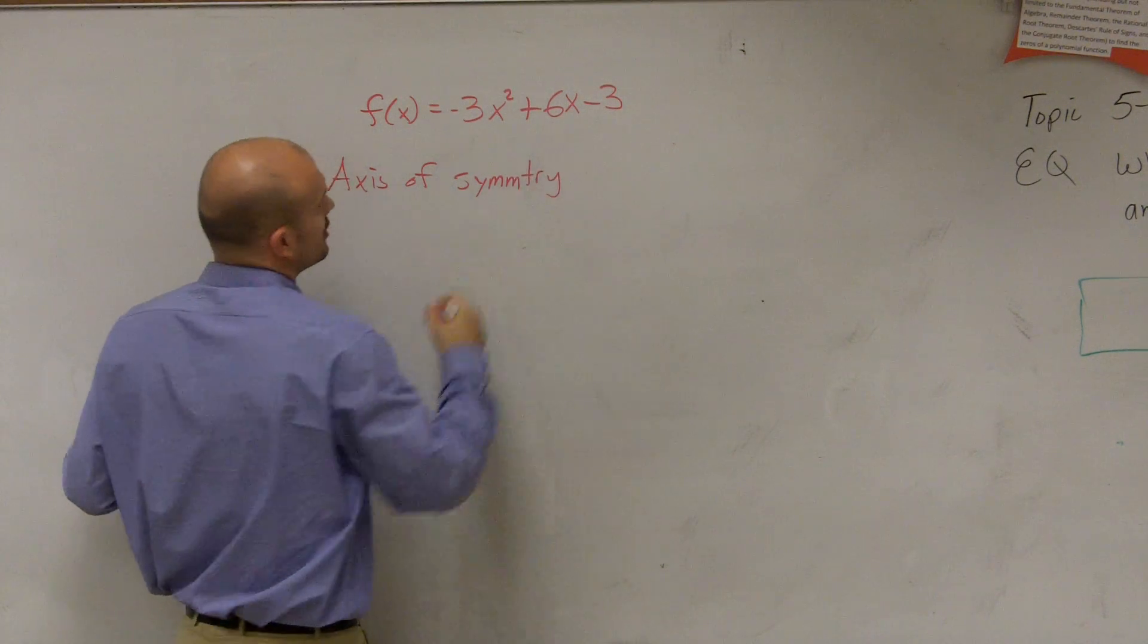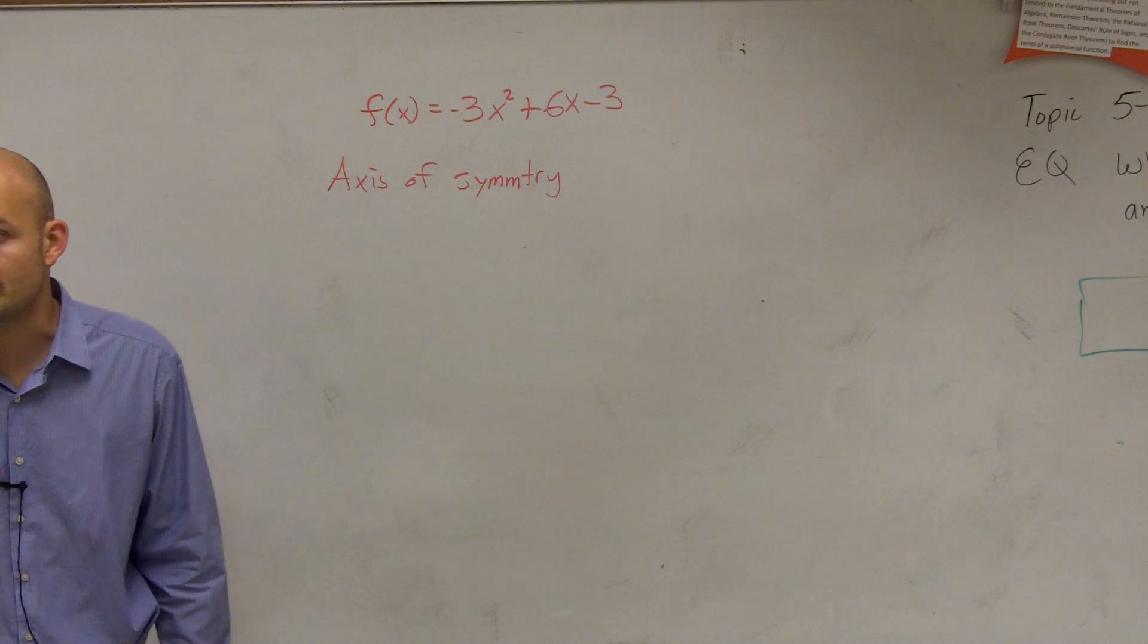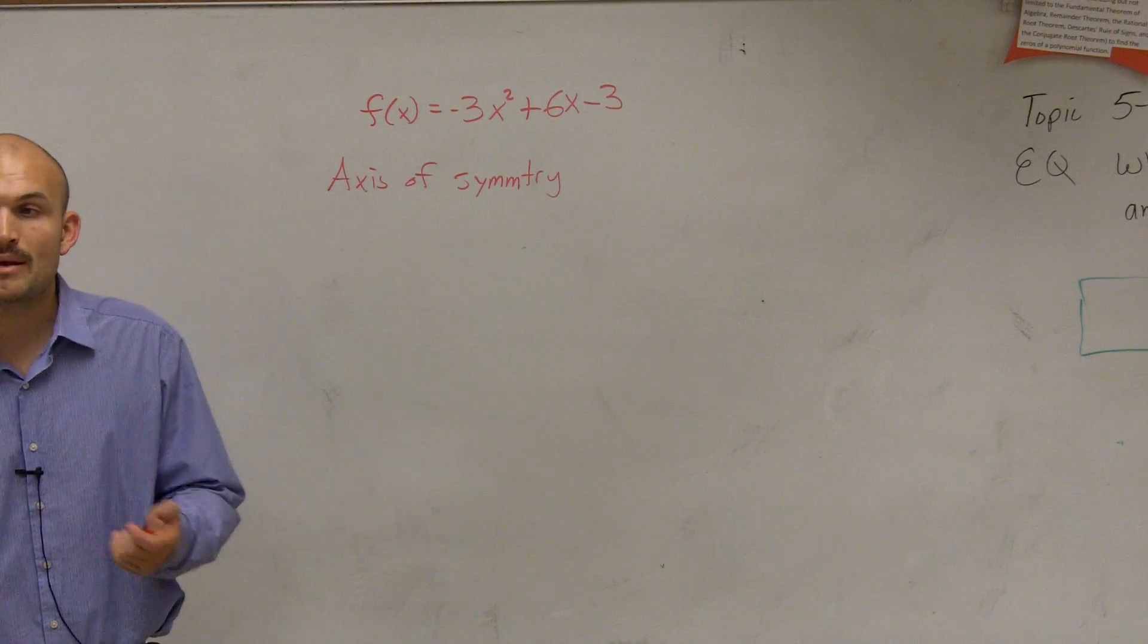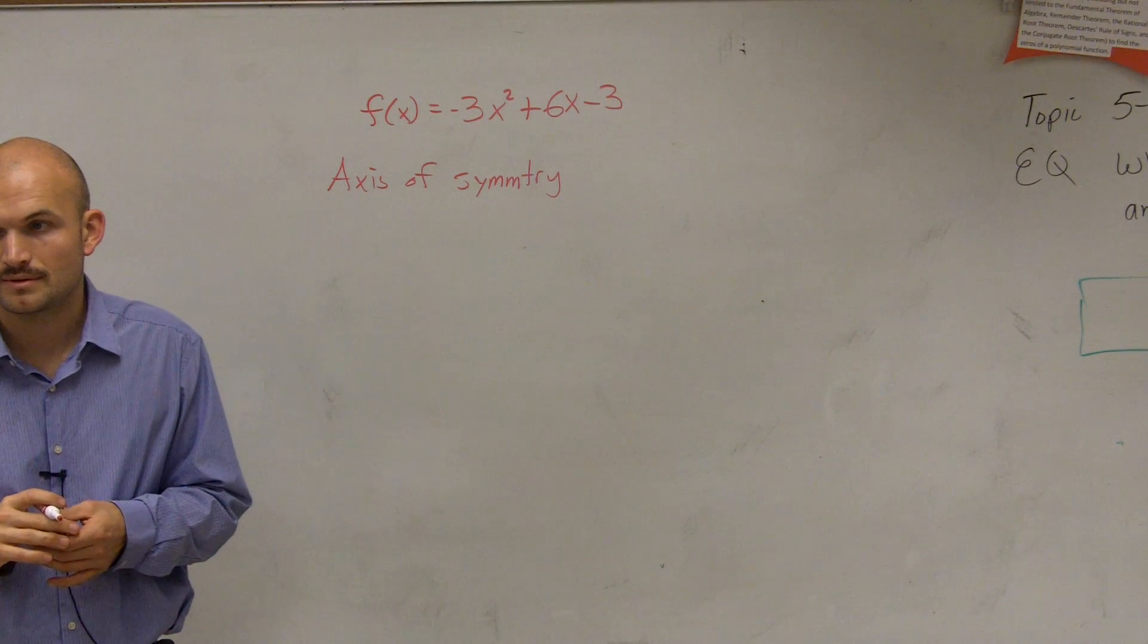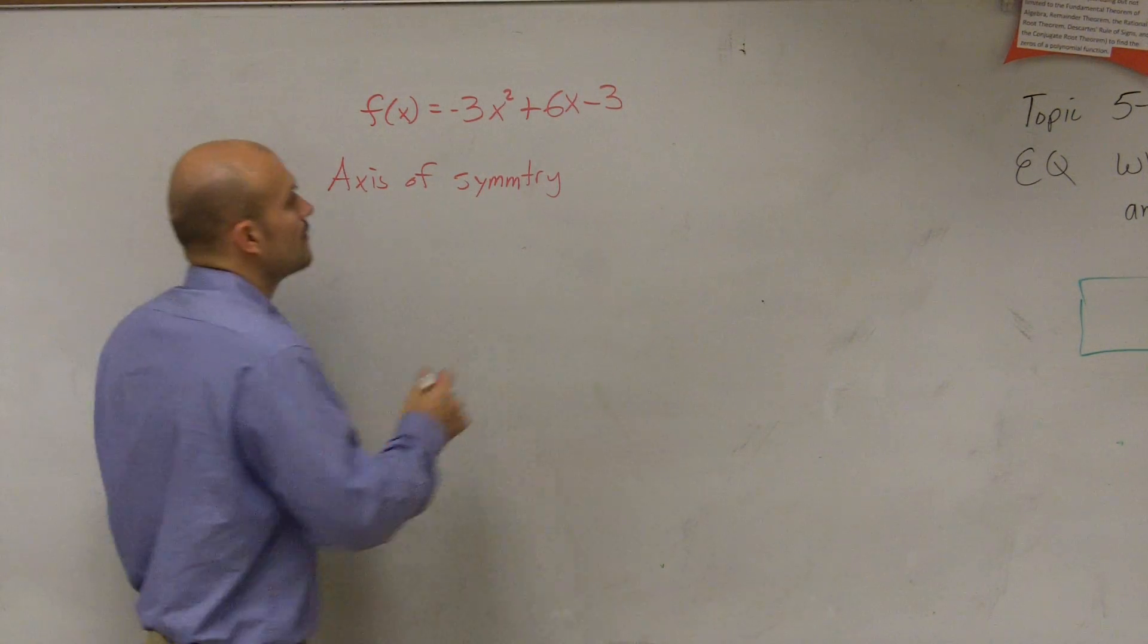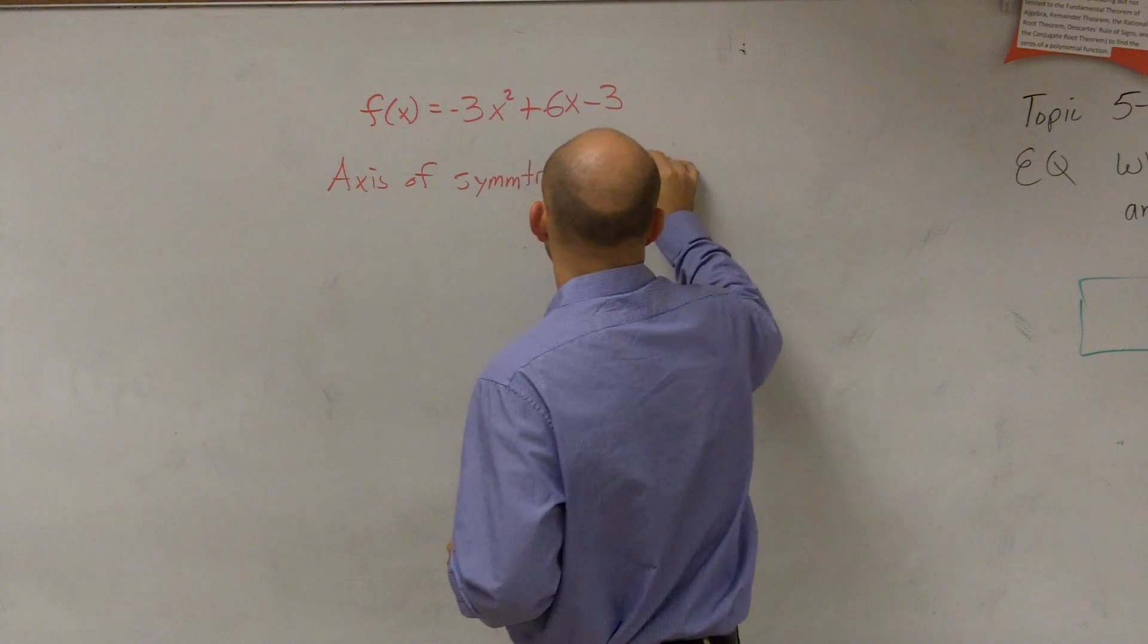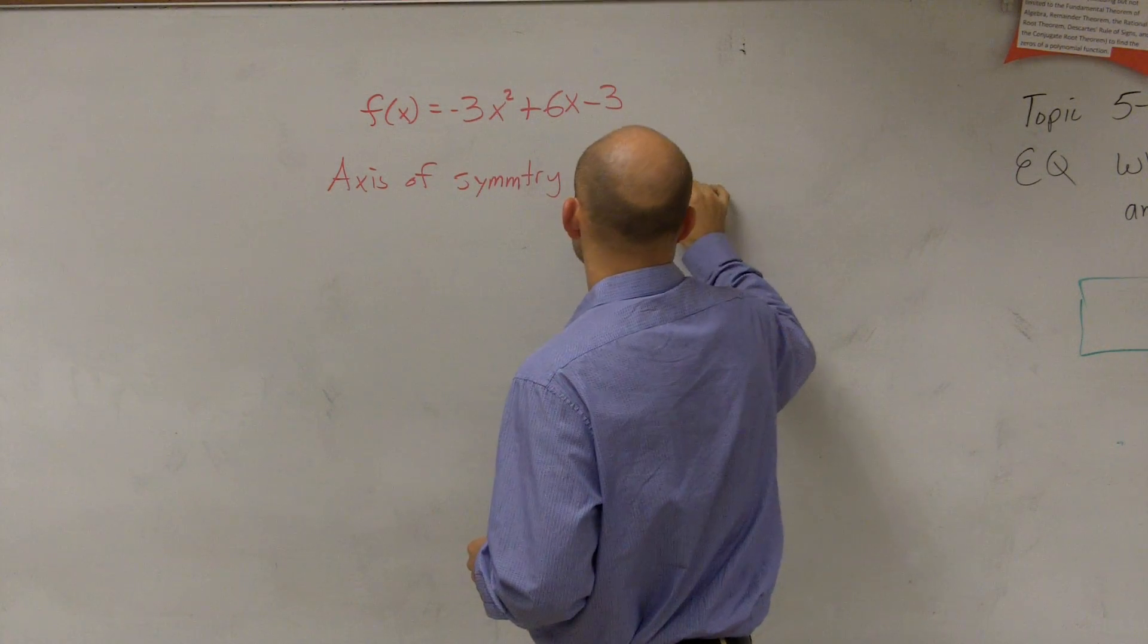Right. It's the vertical line that's going to be symmetrical about our parabola. Do you remember the formula for finding that axis of symmetry? X equals opposite of b divided by 2a.